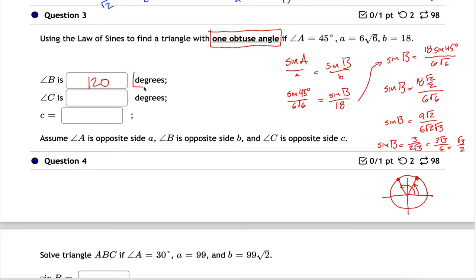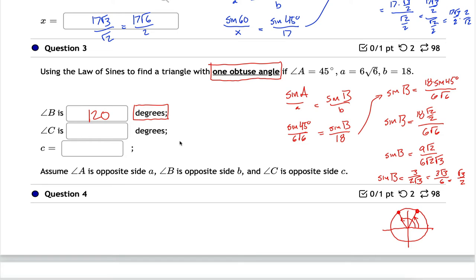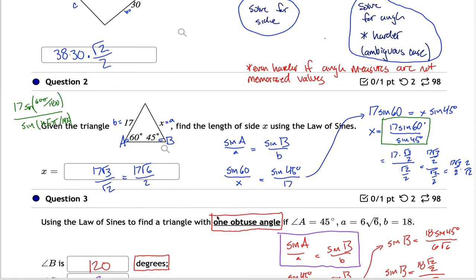The answer is in degrees, so type in 120. We've found B but we're not done. To find C: the sum of angles in a triangle is 180°, so C = 180° − 120° − 45° = 15°. Once you have C, set up the law of sines again using the C pair alongside another known pair to solve for side length c.